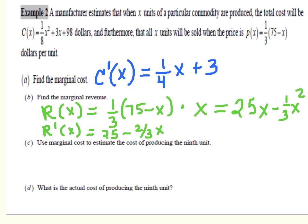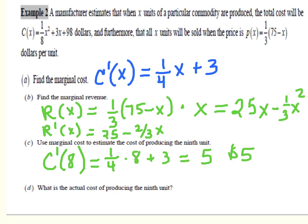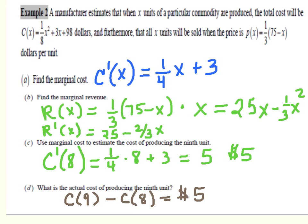In Part C, we use marginal cost to estimate the cost of producing the ninth unit. Remember, we find the rate of change at the unit right before it, the eighth unit. C prime of 8 equals one-fourth times 8 plus 3, which simplifies to 5. So the estimated cost to produce the next item is $5. To find the actual cost of producing the ninth unit, we compute c of 9 minus c of 8, and that difference gives us $5.13.